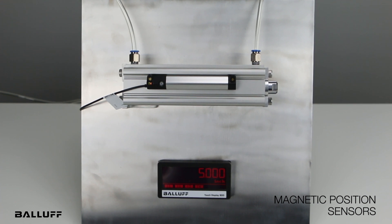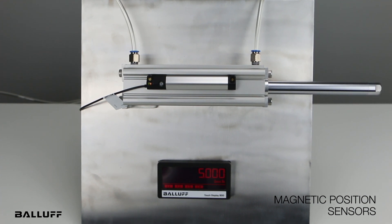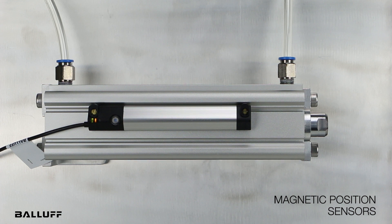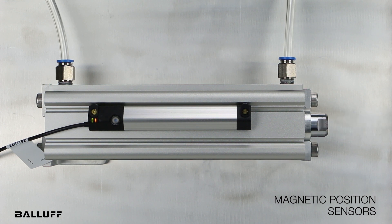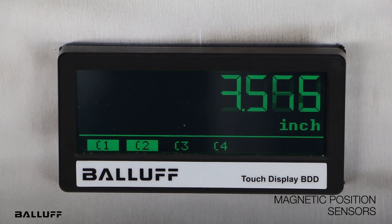They provide continuous position information over the entire cylinder stroke, an improvement over discrete pneumatic cylinder switches. These provide continuous linear feedback, detecting and measuring the position of pneumatic or hydraulic cylinder rods and actuators through non-ferrous housing walls over the entire measurement range and without contact.